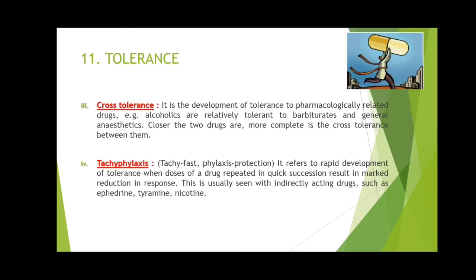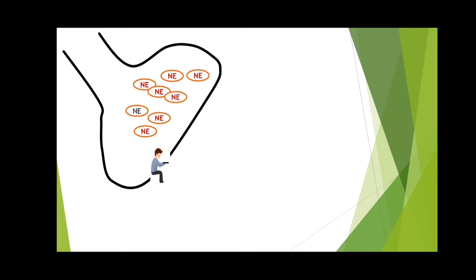Tachyphylaxis means fast tolerance and it usually occurs with indirectly acting drugs. For an example: suppose this is a neuron that contains norepinephrine, so obviously it is a noradrenergic neuron. This noradrenergic neuron has a carrier protein, a transporter protein known as NET — the norepinephrine transporter.